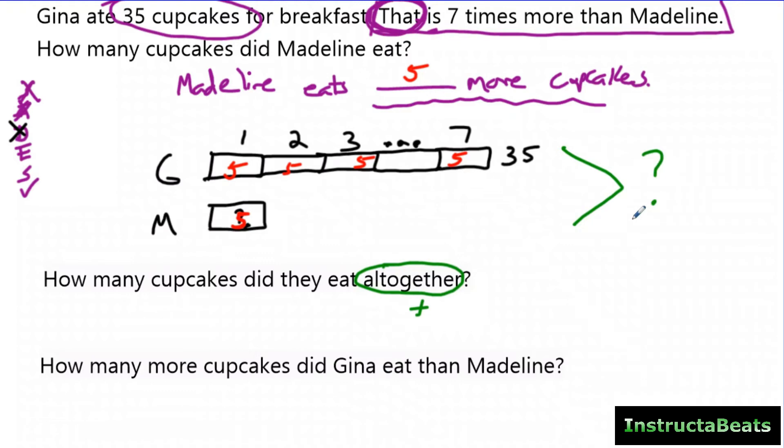So we just put our question mark right here. We still have to divide to figure out how much Madeline had. But now we know Gina had 35 and Madeline had five, which means they had a total of 40 altogether. So same tape diagram, your question mark just goes in a different place.